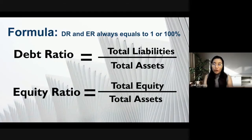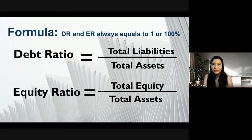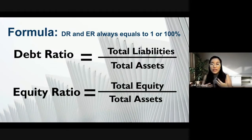You can see the total assets, total liabilities, and total equity. We just basically substitute the values into the formula. Keep in mind that the debt ratio and the equity ratio will always sum to 1, or 100%.